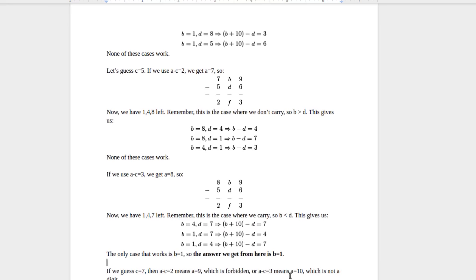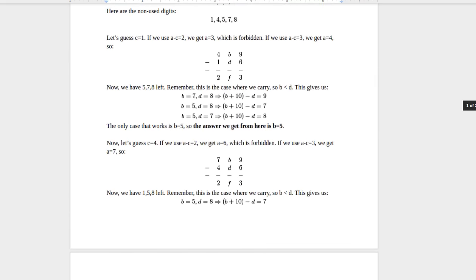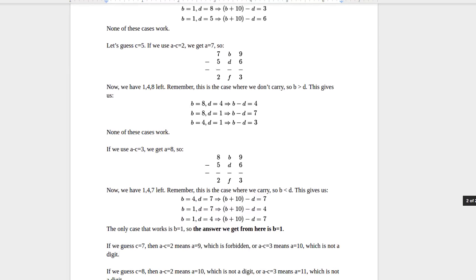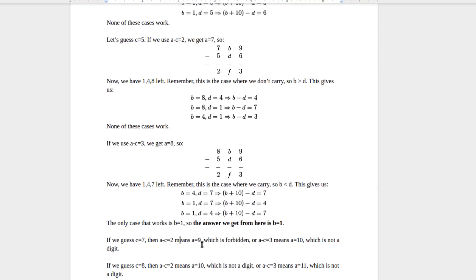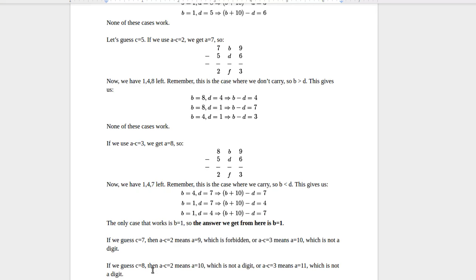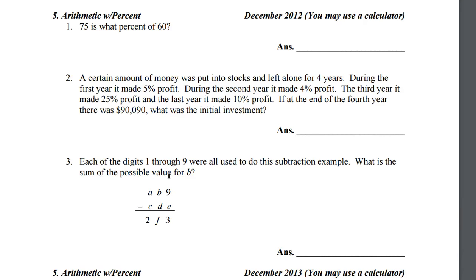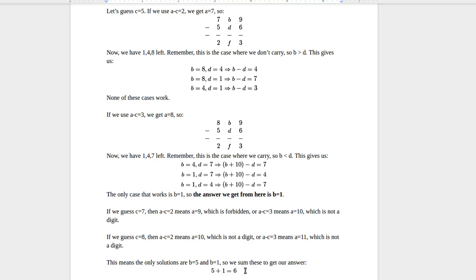So we have b equals 5 and b equals 1. Now if we guess c equals 7: a minus c equals 2 leads to a equals 9, which is forbidden; a minus c equals 3 means a equals 10, which is too big since digits go only to 9. If c equals 8: a minus c equals 2 means a equals 10, too big; a minus c equals 3 gives a equals 11, also too big. So c equals 7 and c equals 8 give no solutions. That means we only have b equals 5 and b equals 1, and their sum is 5 plus 1 equals 6. Our answer is 6.